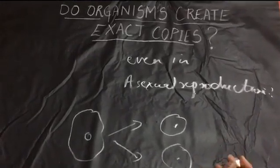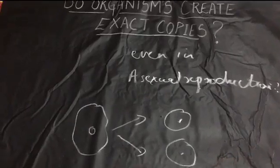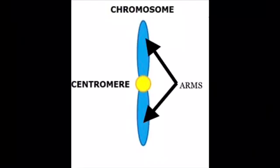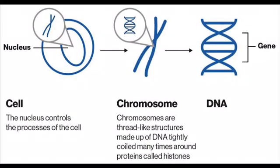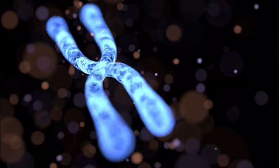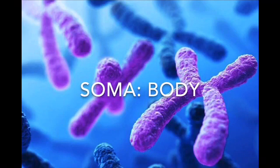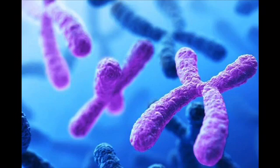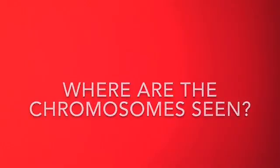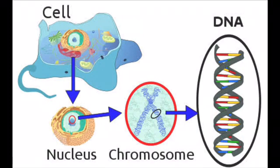To understand the reason, you need to learn certain terms: what is a chromosome, what is DNA, and what is a gene. You don't have to learn all these terms in detail. Chromosome is a Greek word — 'chroma' means colored and 'soma' means body, so chromosomes are 'colored bodies.' Chromosomes are seen inside the nucleus.